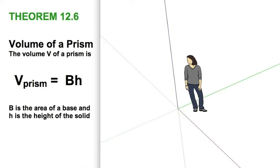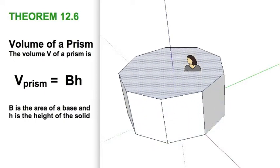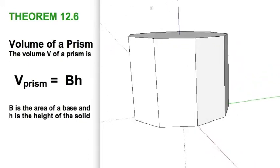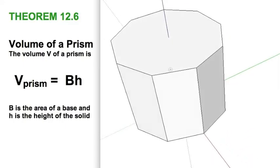Here we go with the volume of a prism. I'm going to have some type of a base — in this case a nonagon, and it's a regular nonagon. The figures don't have to be regular, but honestly we're going to be doing a lot that are. We're going to take this base and extrude it, or apply a height to it. Find the area of the base, multiply by the height, and we've got the volume.